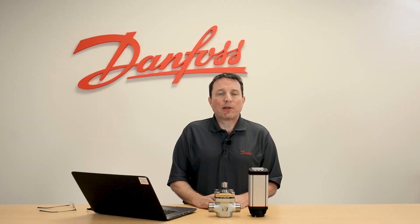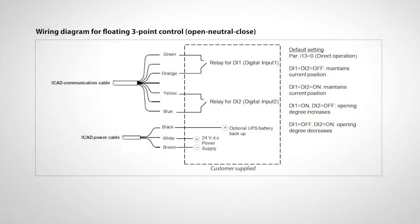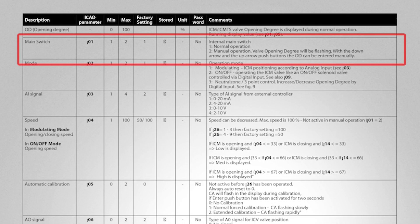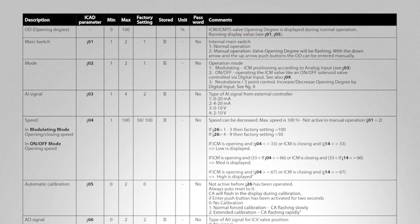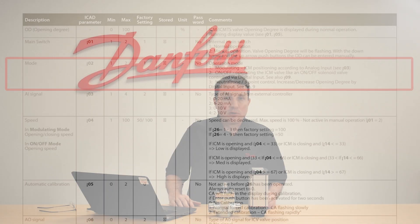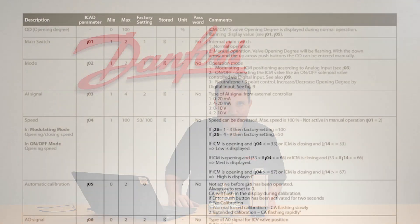The last application for the iCAD is 3-point neutral zone control. Please see the image on the screen for the wiring. The main switch IO1 would need to be set to 1. The mode IO2 would need to be set to 3 for neutral zone control. And that should be the parameters that you need to change for this application.